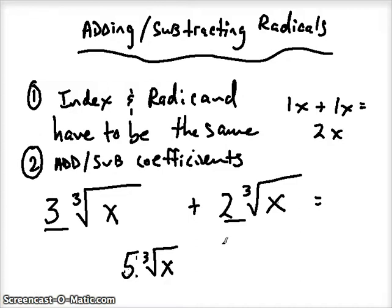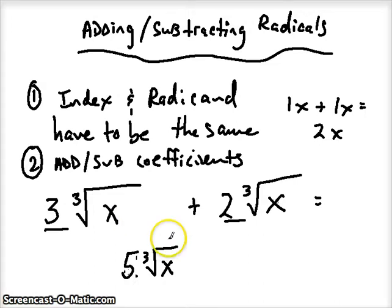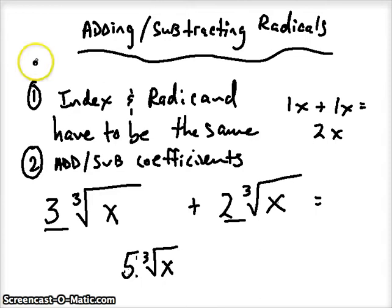The easier examples are when the index and radicand are already the same. It gets more difficult when we have to simplify first in order to get our index or radicand to be the same. We'll do a little bit of both.